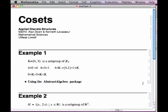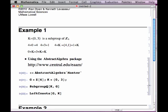Now, in this case, if you're using the AbstractAlgebra package, this calculation can be done. If you load the package, then define G to be Z[6], which is the... Z is the function that generates the group of integers mod n, and let K be the set or list {0, 3}.